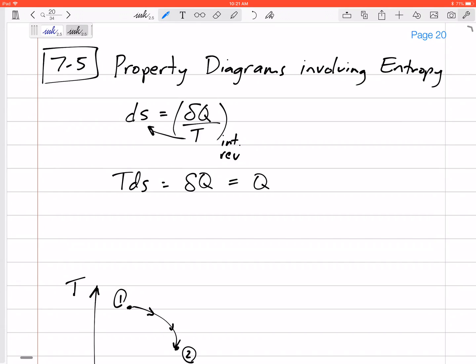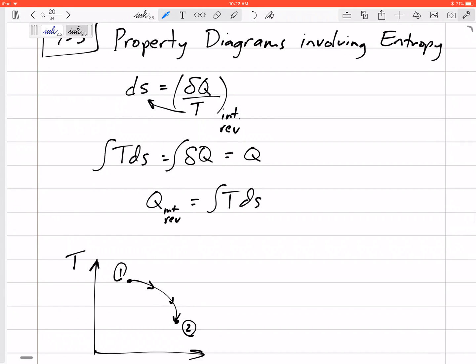And so we've got TDS is equal to delta Q. Or the change in Q. If we want capital Q, if we want the heat transfer, then we can take the integral of both sides to get Q.